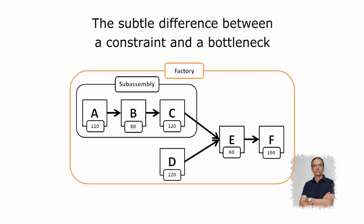This will remain true until improvements made on E increase its throughput beyond that of bottleneck B. From then on, and with all other things being equal, B will become the system's constraint, and E will remain a bottleneck as long as its capacity is lower than demand.